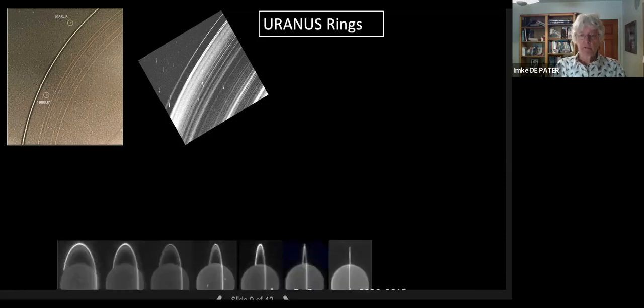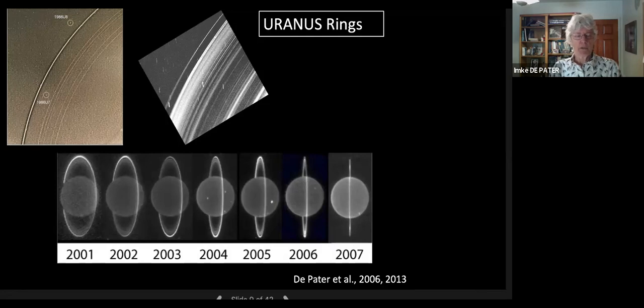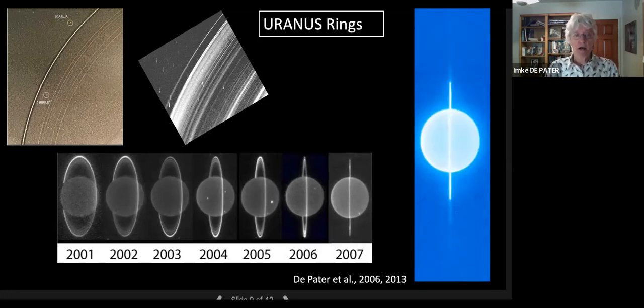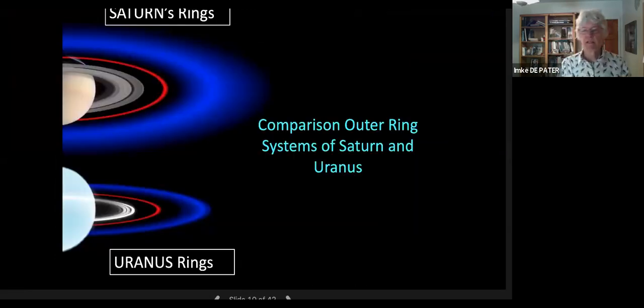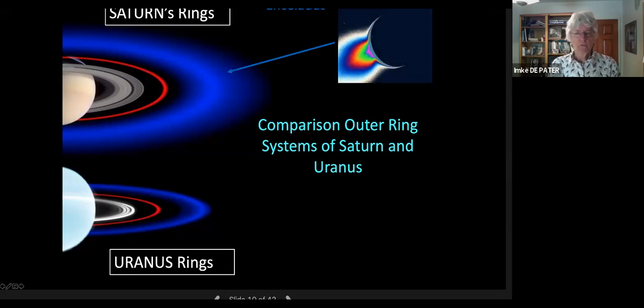With Keck, we have monitored these rings while the rings were closing up. The viewing aspect changed between 2001 and 2007, when the rings were completely edge-on to us. When they are edge-on, you start to see rings outside the main ring system. Here we have the main ring system, and then you very faintly can see some more rings outside, which are the so-called mu and nu rings. Those rings are intriguing because they look a lot like Saturn's G and E rings.